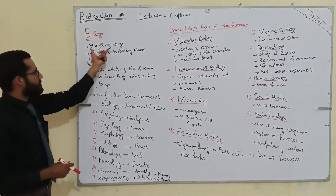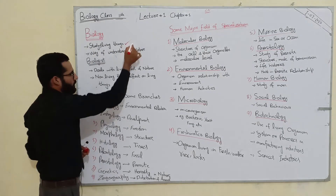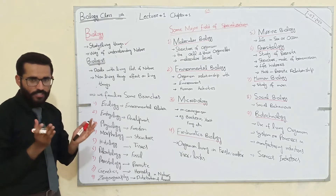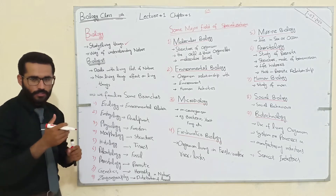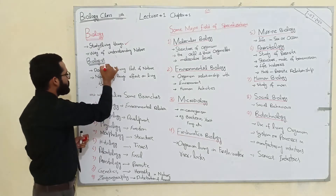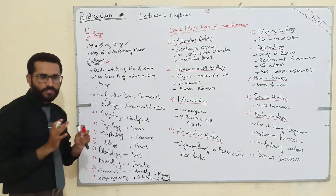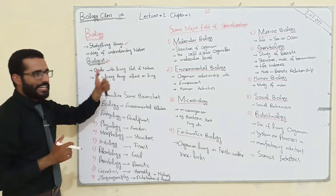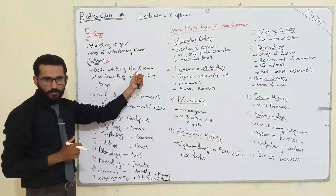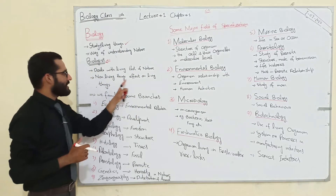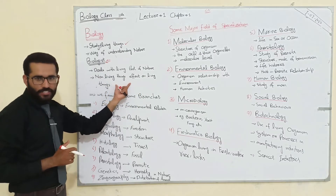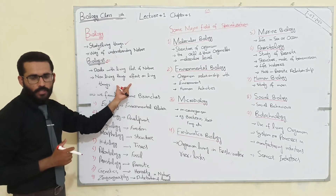What is Biology? Biology is the study of living things. Biology is the branch of science which deals with the study of life and understanding of nature. A Biologist is the person who studies biology. The Biologist deals with the living part of nature and also how non-living things affect living things. They identify the structure, functions, and different aspects of living things.